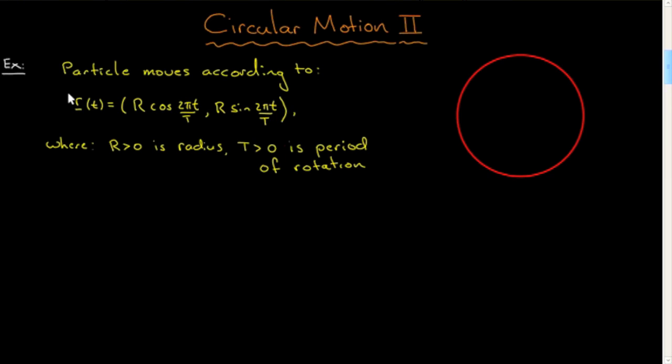Again, a typical example you would come across. So a particle moves according to the following parameterization, and so now what I've done is I've introduced two constants, capital R and capital T, into the parameterization. R, a positive constant, is the radius of the path, and T, a positive constant, is the period of rotation.